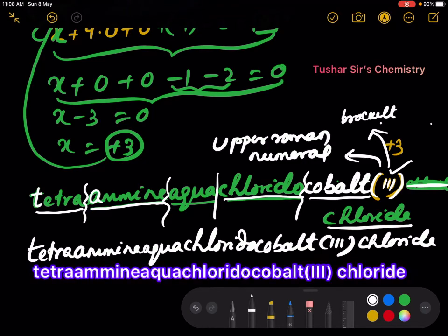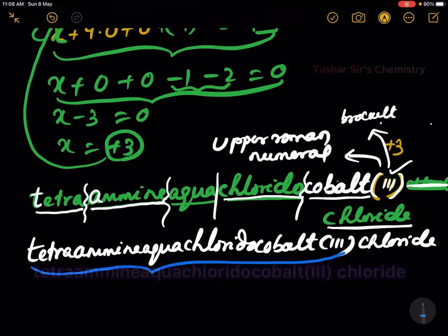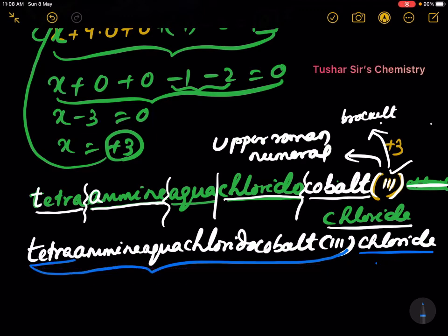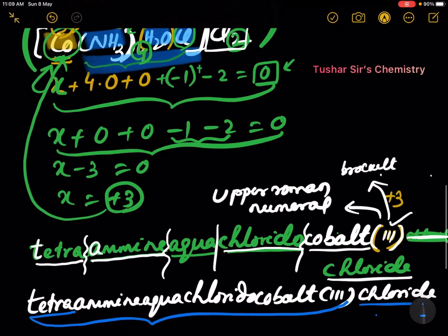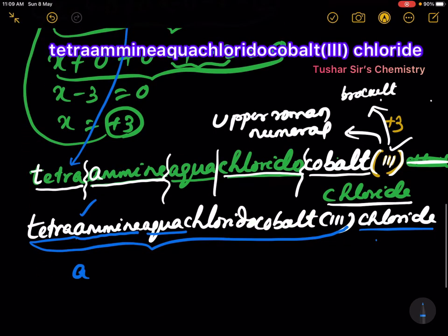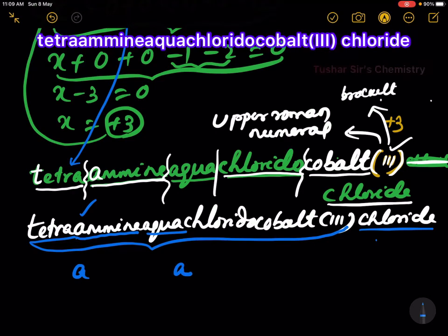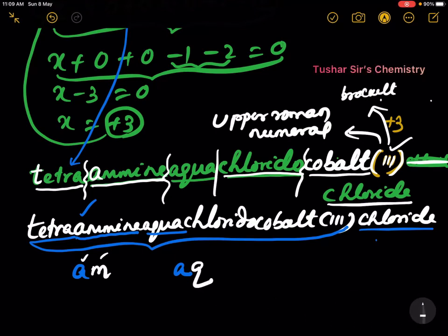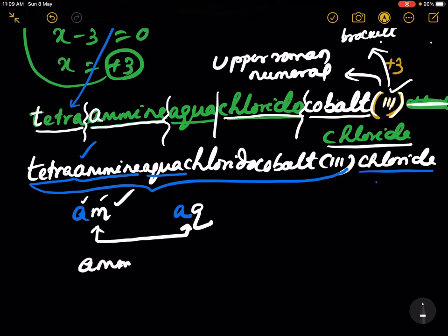The complex part is written as one word, and this is the counter ion. Tetra means there are four ammonia molecules in the complex. Between amine and aqua, amine is written first. Why? In both cases the starting letter is A, but in amine the second letter is M, and in aqua it is Q. Between M and Q, M comes first alphabetically, so amine comes before aqua.